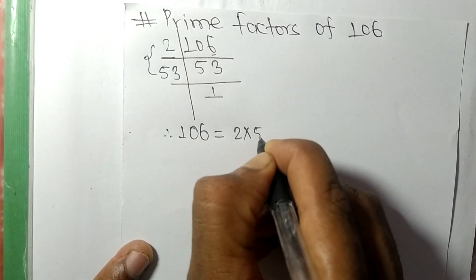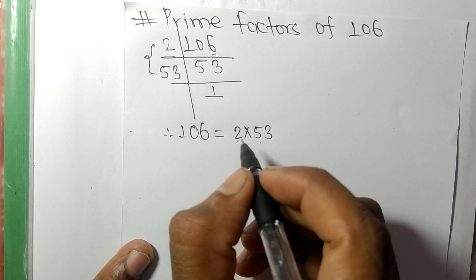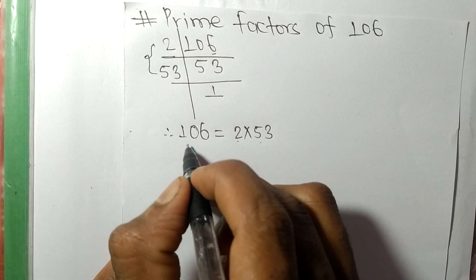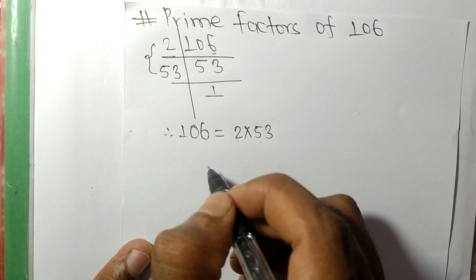So 2 and 53 are the prime factors of 106. So this much for today and thanks for watching.